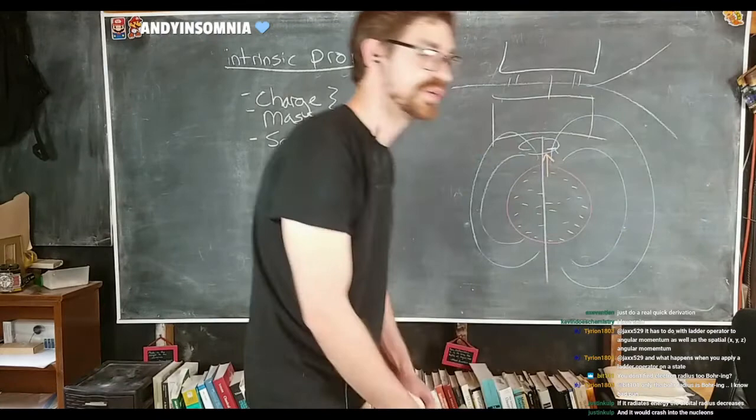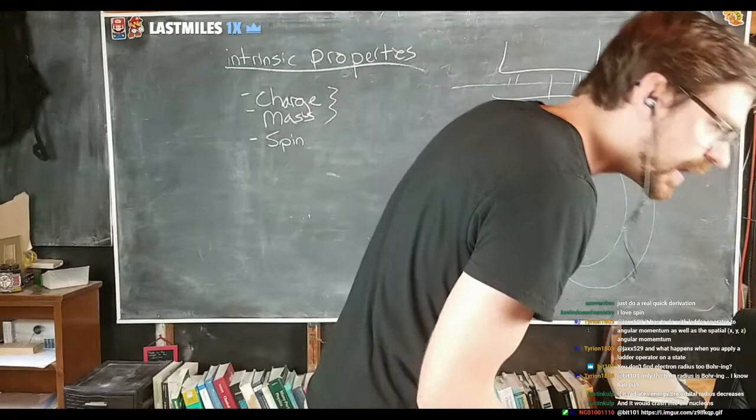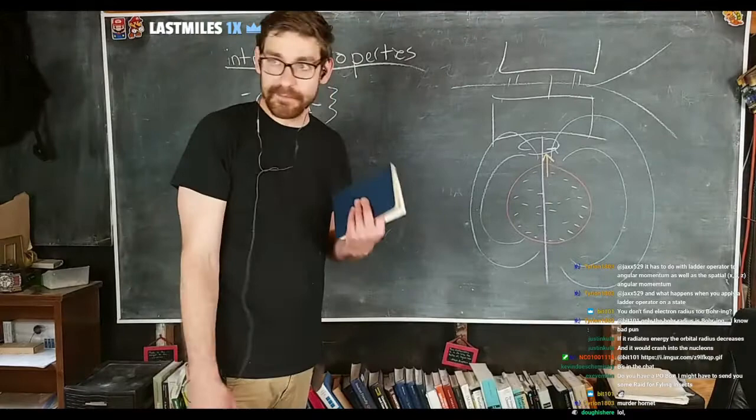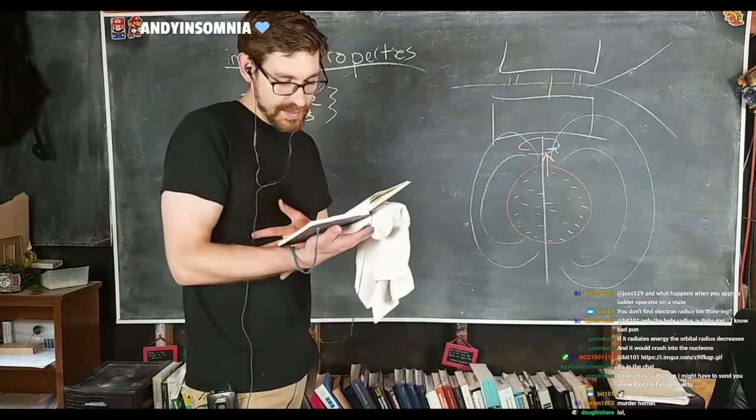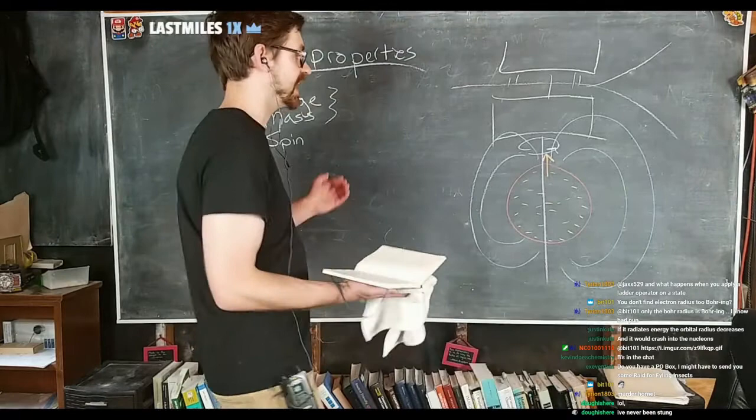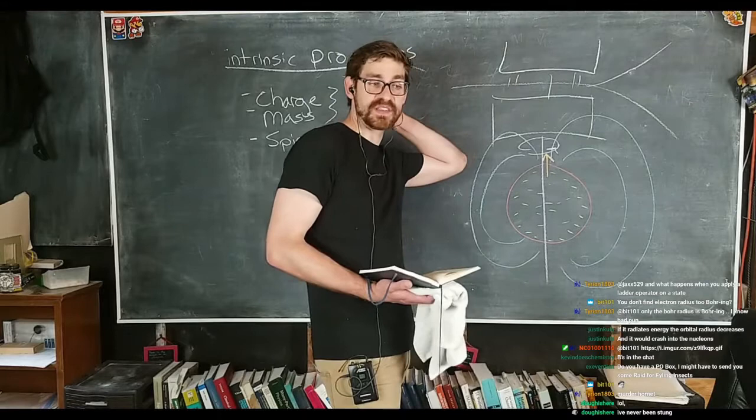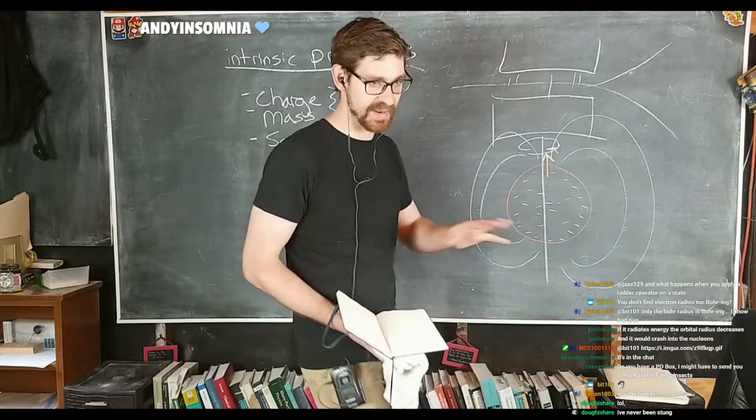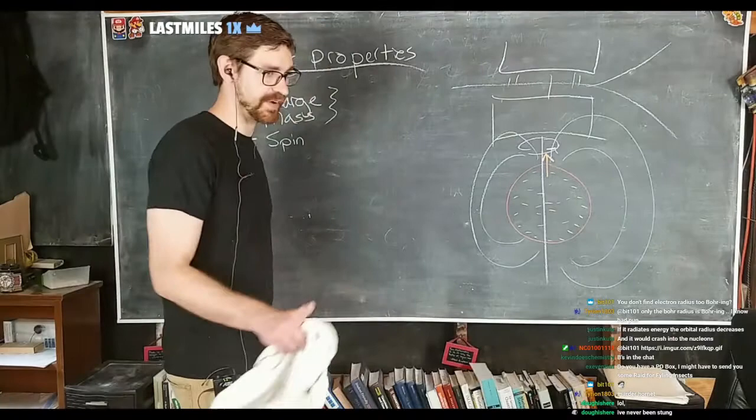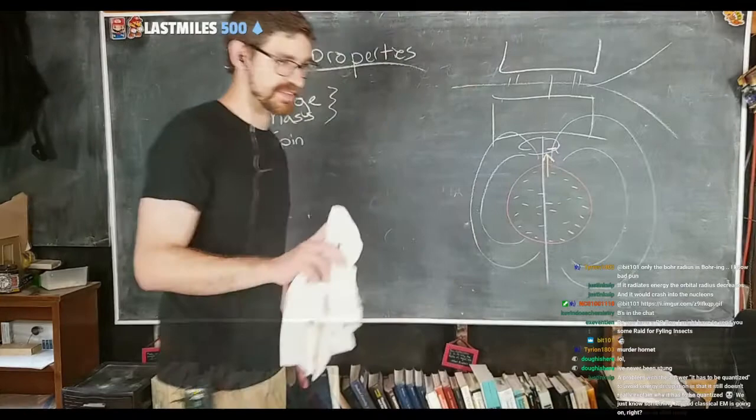If it radiates energy, the orbital radius decreases and it would crash into the nucleus, which it doesn't. It's a stable orbit. So that's another problem. So what do we do with all this? Right? We know that if it was actually spinning, it would have some radiating energy that would be an issue. It would have a neutral, neutral particles actually spin. The particle that is done using the Stern-Gerlach experiment is silver and silver is neutral. But silver was definitely used for the Stern-Gerlach. So what do we do with this? Right?